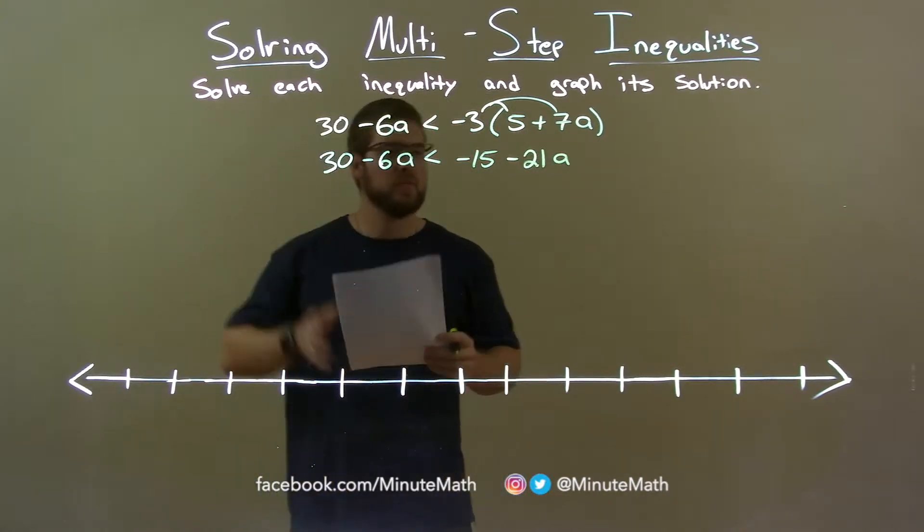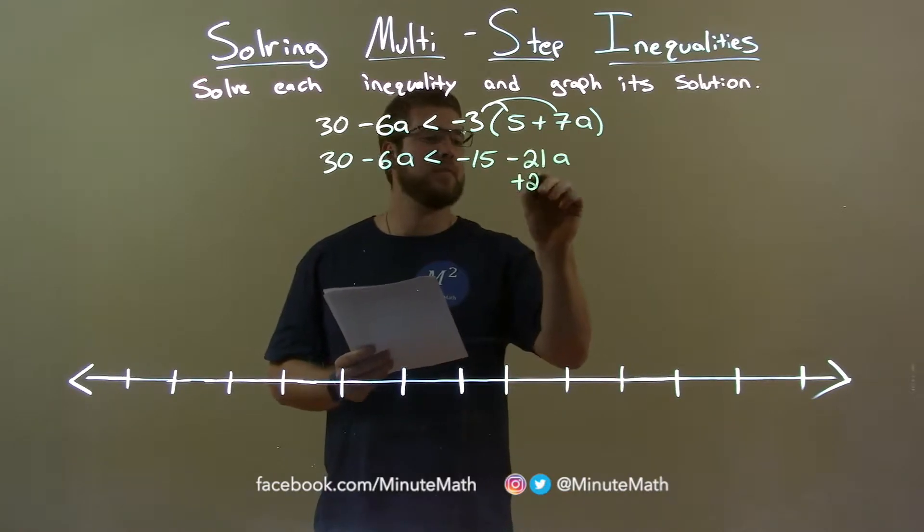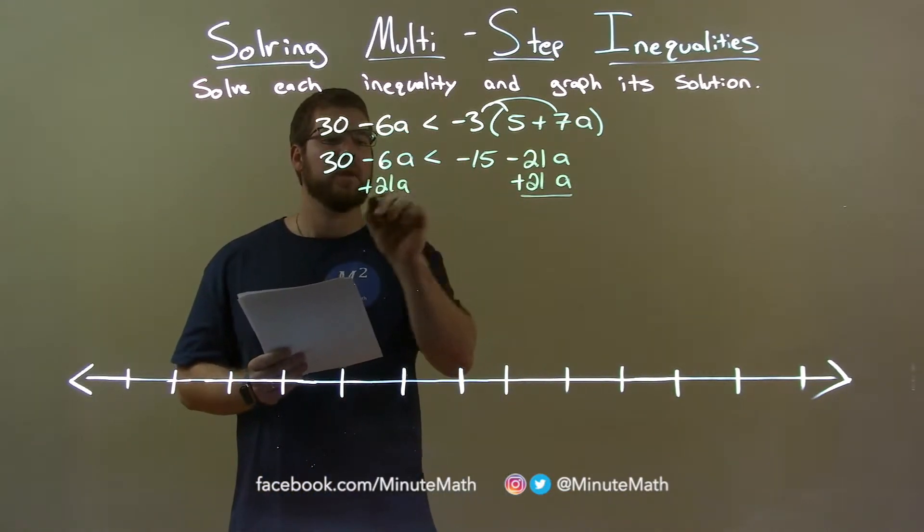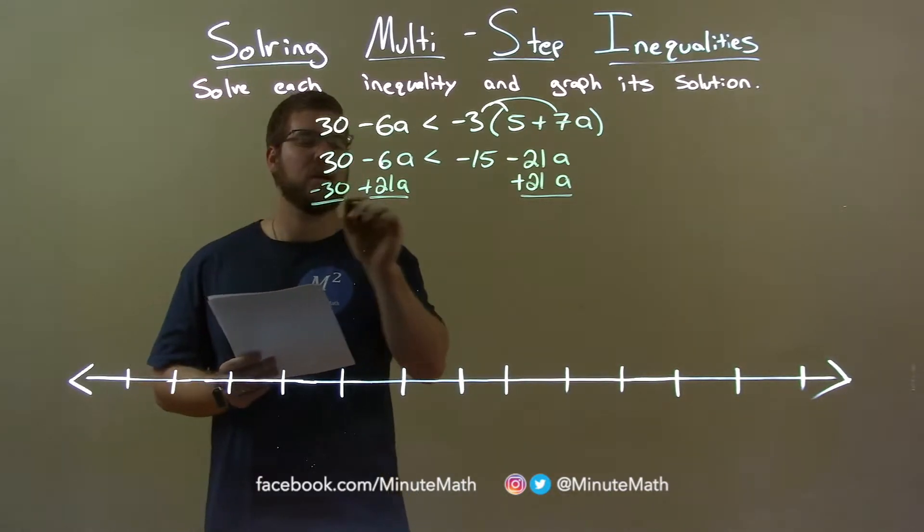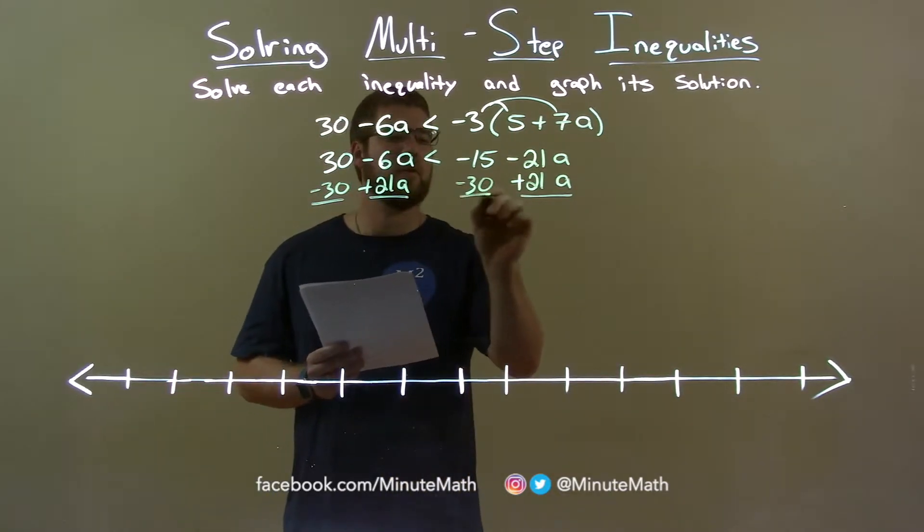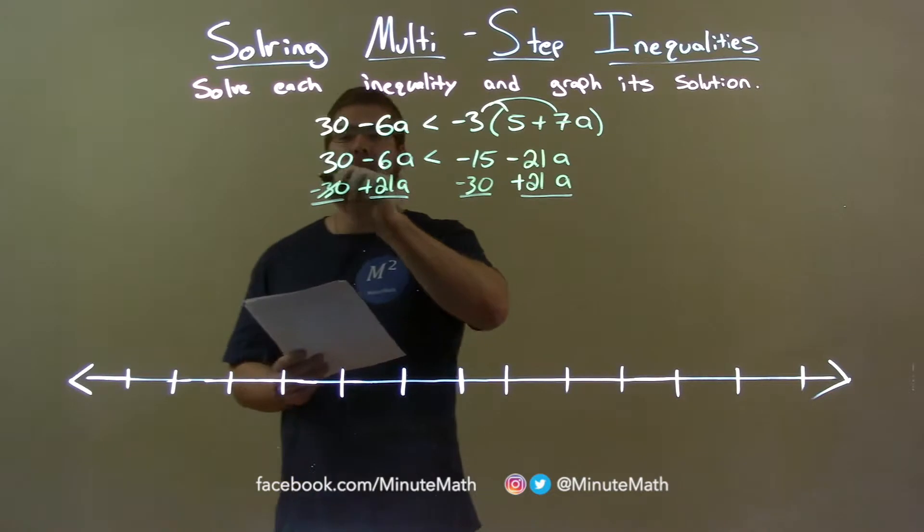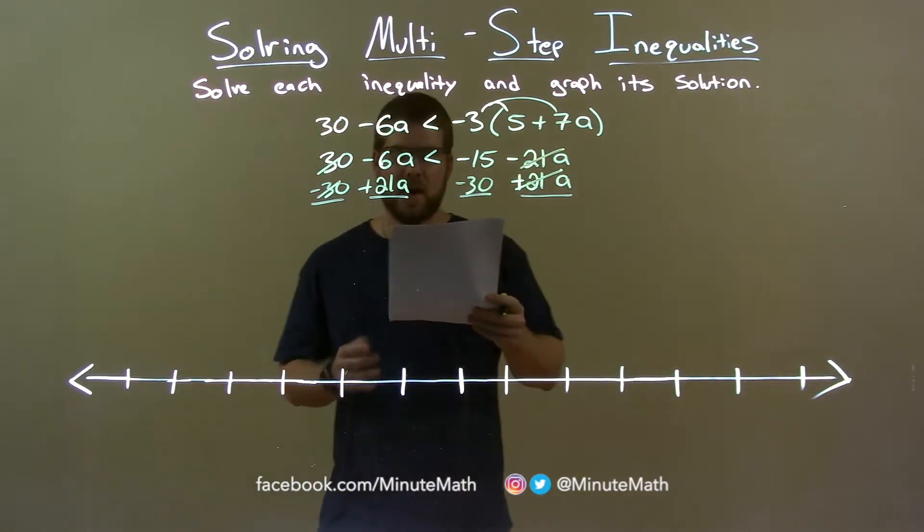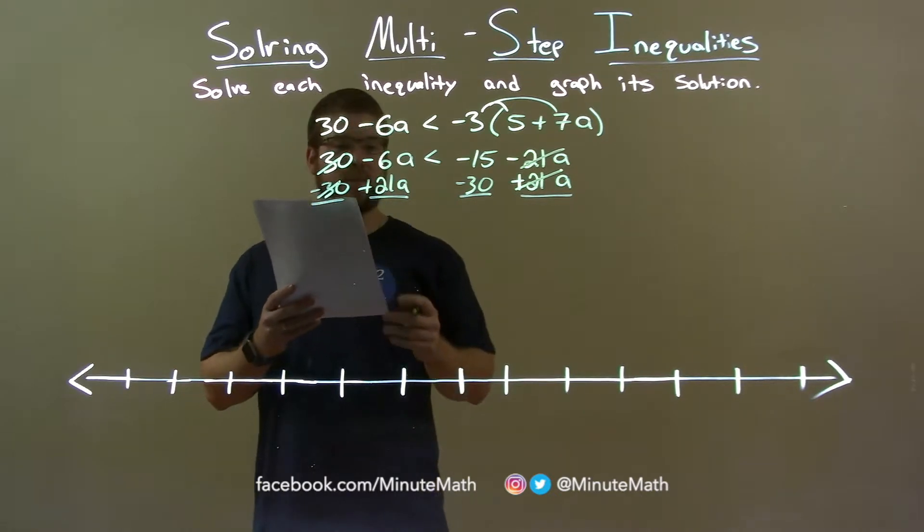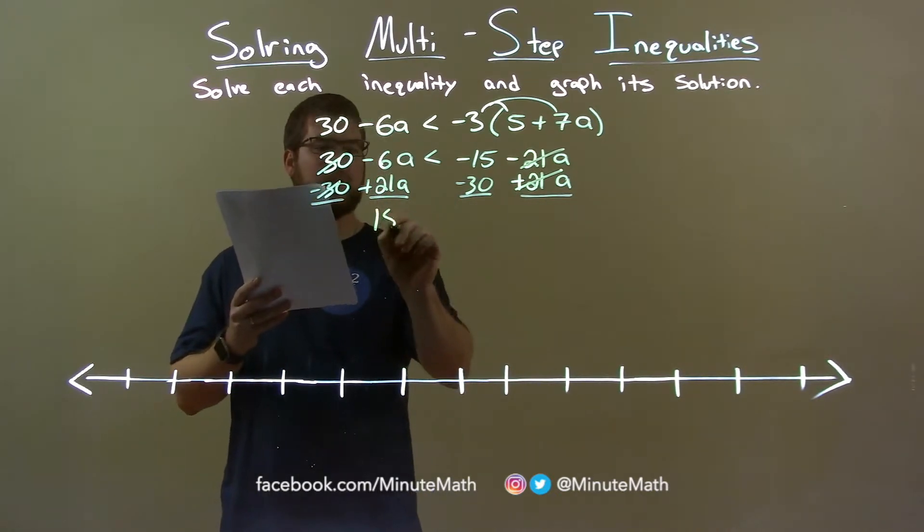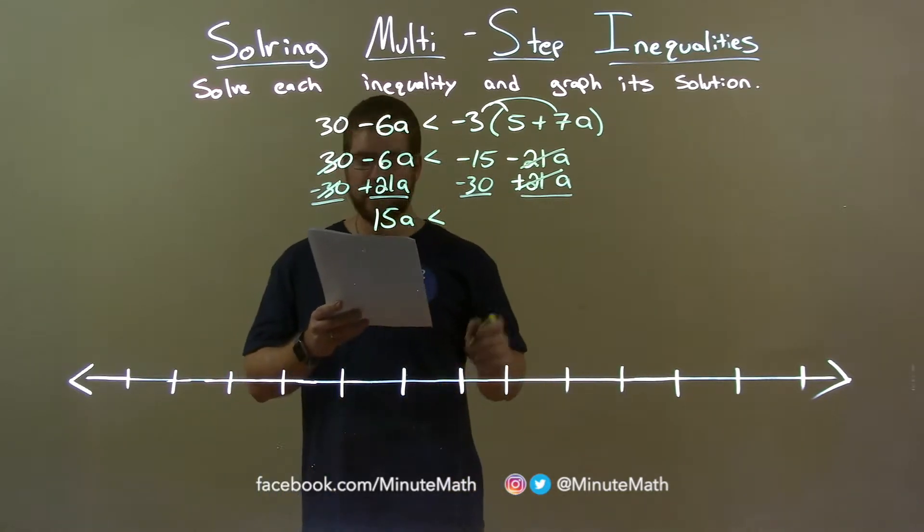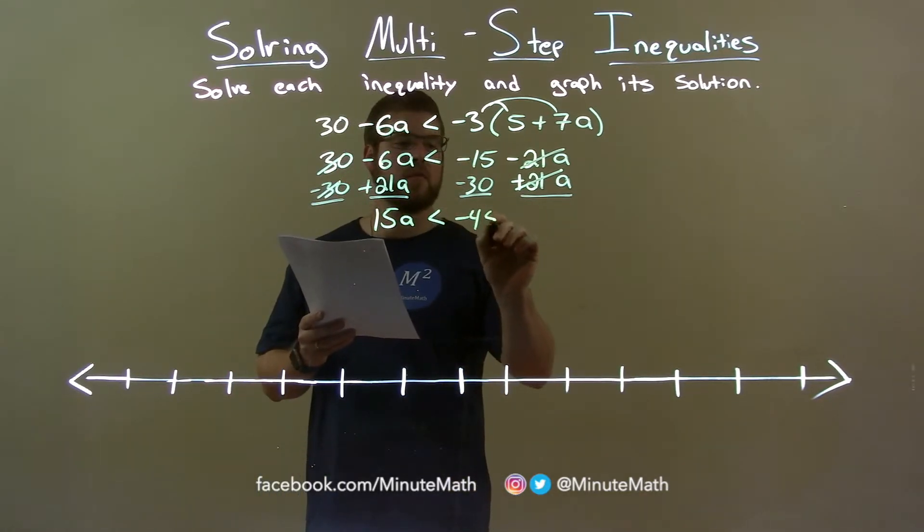So, let's combine our like terms. Let's bring the a's to the left. So, add 21a to both sides and let's subtract 30, the numbers to the right. So, subtract 30 from both sides. 30s cancel here and the 21as cancel there. Negative 6a plus 21a is 15a. It's less than, and negative 15 minus 30 is negative 45.